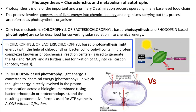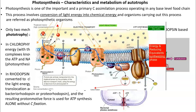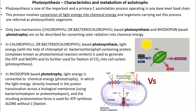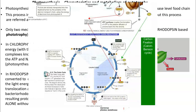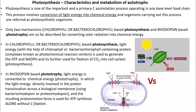Photosynthesis is a chlorophyll or bacterial chlorophyll-based process in which light energy is used to generate ATP and NADPH. Light energy is first harnessed by chlorophyll in the plant system, or bacterial chlorophyll present in sulfur bacteria. These contain protein complexes commonly referred to as photochemical reaction centers, in which light is received and converted into chemical energy — ATP and NADPH. This chemical energy, created by the process of photophosphorylation, is further used for fixing atmospheric carbon dioxide into cell carbon.